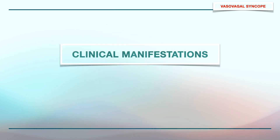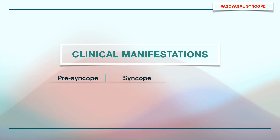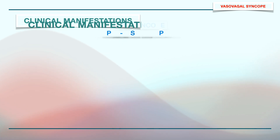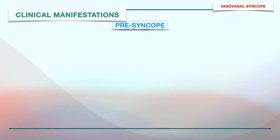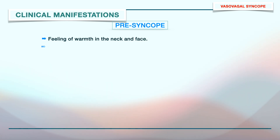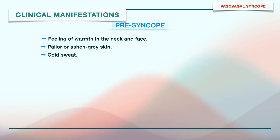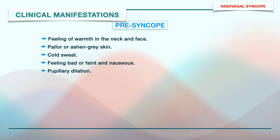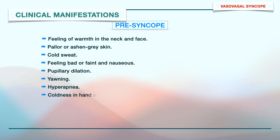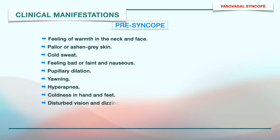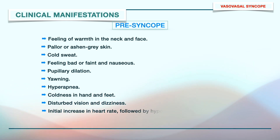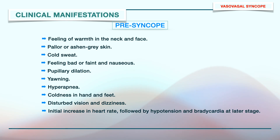Coming to the clinical manifestations, these can be grouped in three categories: presyncope, syncope, and postsyncope. The signs and symptoms in the presyncopal phase include feeling of warmth in the neck and face, pallor or ashen gray skin color, cold sweat primarily on the forehead, feeling bad or faint and nauseous, pupillary dilation, yawning, hyperpnea, coldness in the feet and hands, disturbed vision and dizziness, and an initial increase in heart rate followed by hypotension and bradycardia at a later stage.